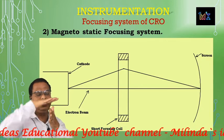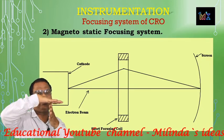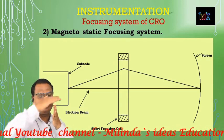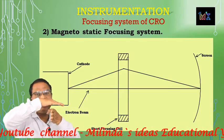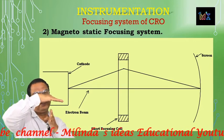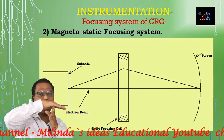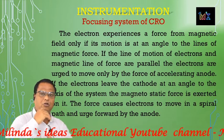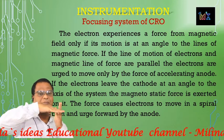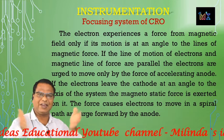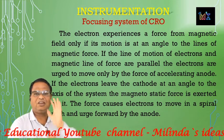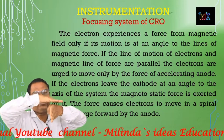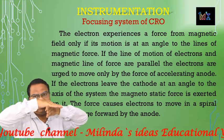As these electrons move toward the screen, a force is exerted by the magnetic field on them. This force returns the para-axial electrons back toward the axis of the electron beam. For non-paraxial electrons, which emit at large angles, about 50% are lost to the walls of the tube. The remaining electrons are returned back toward the axis by the magnetic force and continue their journey toward the CRT screen.